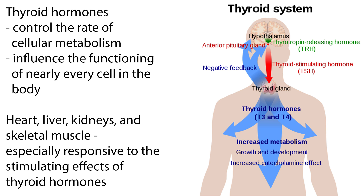The heart, liver, kidneys, and skeletal muscle are especially responsive to the stimulating effects of thyroid hormones. Thyroid hormones are required for normal growth and development, and are considered especially critical for brain and skeletal development and maturation.